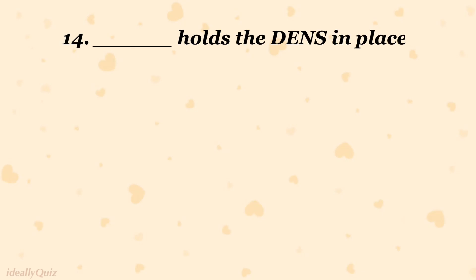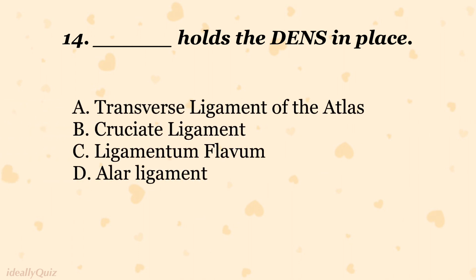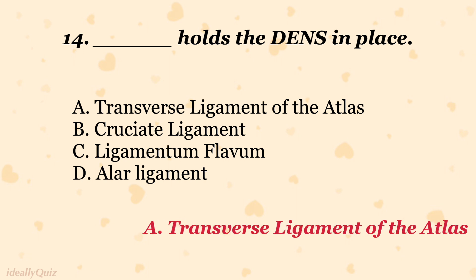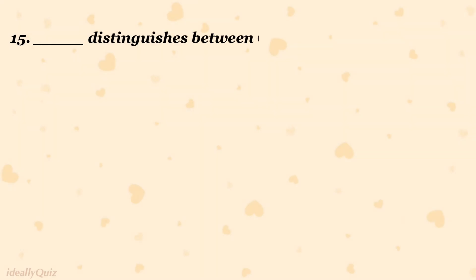Which structure holds the dens in place? A. Transverse ligament of atlas, B. Cruciate ligament, C. Ligamentum flavum, D. Alar ligament. The correct answer is A. Transverse ligament of the atlas.